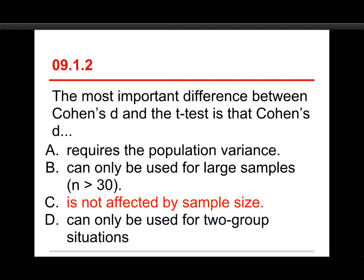Now, these other ones require the population variance, that's sort of a reference to the z-test, but that's just not anything we need. Can only be used for large samples? Not at all. We often use it for small samples. Can only be used for two group situations? Actually, Cohen's d can be used in a lot of situations. We used it for the one-sample z-test, the one-sample t-test, the repeated measures t-test, and the two-sample t-test.